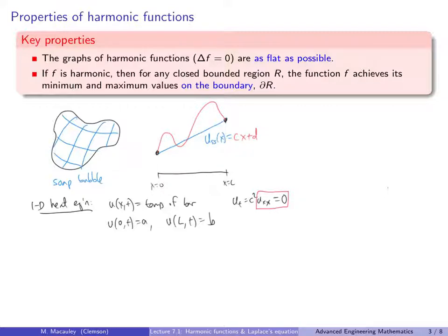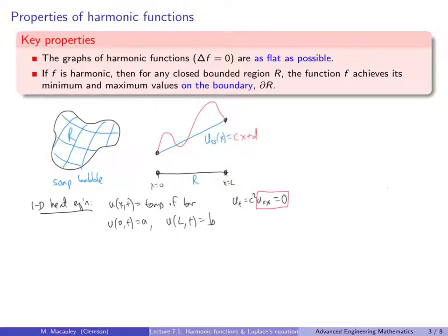In one fewer dimension, instead of a soap bubble, think of stretching plastic wrap around two points — you get a straight line, the 1D harmonic function that is as flat as possible. Now going up to the 2D heat equation: imagine a metal plate where we fix temperatures along the boundary — say zero on the right, a dip on the left, and something along the back edge. As time goes to infinity, heat dissipates and the temperature approaches a soap bubble steady state solution with Δu = 0.